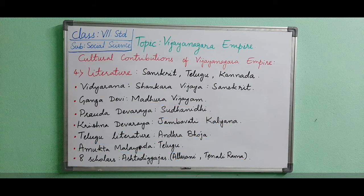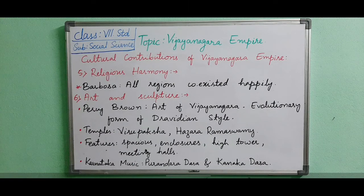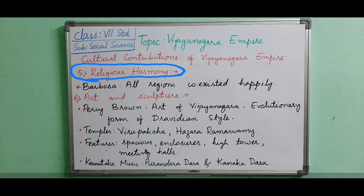Now next we will deal with Religious Harmony. Harmony means when there is love and affection between people of different religions. Kings of Vijayanagara kingdom were great followers of religious tolerance — they supported all religions and even built a mosque in their capital. The Shravan Belgola inscription of 1368 CE resolved differences between Jain and Vaishnava communities. A foreign scholar named Barbosa visited during the rule of Krishna Deva Raya.